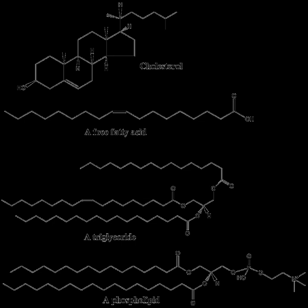Glycerolipids are composed of mono-, di-, and tri-substituted glycerols, the best known being the fatty acid triesters of glycerol, called triglycerides. The word 'triacylglycerol' is sometimes used synonymously with 'triglyceride'. In these compounds, the three hydroxyl groups of glycerol are each esterified, typically by different fatty acids. Because they function as an energy store, these lipids comprise the bulk of storage fat in animal tissues. The hydrolysis of the ester bonds of triglycerides and the release of glycerol and fatty acids from adipose tissue are the initial steps in metabolizing fat. Additional subclasses of glycerolipids are represented by glycosylglycerols, which are characterized by the presence of one or more sugar residues attached to glycerol via a glycosidic linkage. Examples of structures in this category are the digalactosyldiacylglycerols found in plant membranes and seminolipid from mammalian sperm cells.